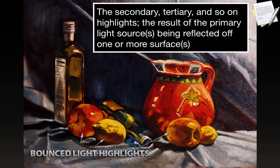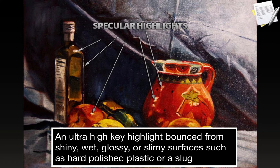The light is coming down from the light source and hitting that white cloth, then bouncing back onto the objects that this painter is painting. A specular highlight is an ultra high key highlight bounced from shiny, wet, glossy, or slimy surfaces such as hard polished plastic or a slug. That's how you make your surfaces look shiny — you give it a little spot of specular highlight. They're pretty much white most of the time, but you can see in this image just a little tiny bit of color has been mixed in with them.